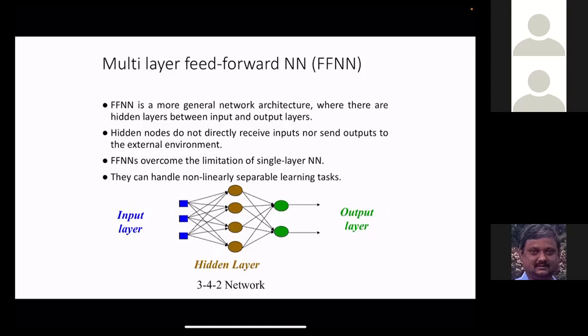You have a high-dimensional weight space — say a thousand-dimensional space if there are a thousand weights. Every combination of weight values is a point in this space. The question is which combination is best for your problem. Once you have the best set of weights you're done: for any new input you do a forward propagation — use the weights to calculate the output — and that's your prediction.